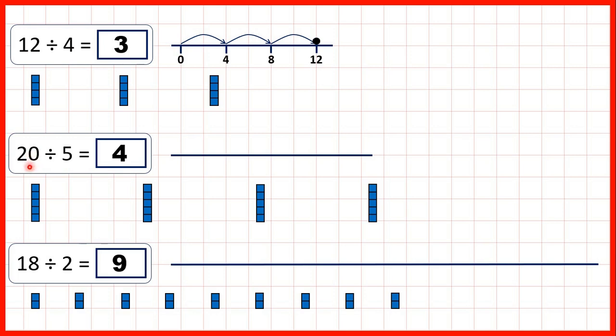Now for 20 divided by 5, we could count in steps of 5 until we get to 20. So counting in 5s, we have 5, 10, 15, 20. So all together we've made 4 jumps of 5 to get to 20. So that's why our answer is 4. 20 divided by 5 is 4 because 4 times 5 is 20.